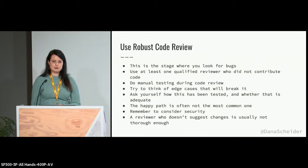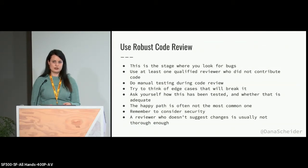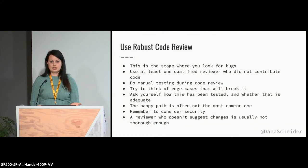Robust code review is one thing I've never seen done well enough in any of the organizations I've worked at. This is a stage where you look for bugs. You want to choose at least one qualified reviewer who does not contribute code on a particular pull request — no one is perfectly objective about their own work, so you just need an outsider to take a look. I encourage people to do manual testing during code review: pull down the branch, test it on your machine, and make sure it works. I've caught a lot of bugs that way. And when you're doing that, be thinking about those edge cases that will break it — if you don't find them, I guarantee your users will.